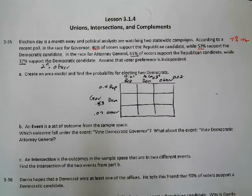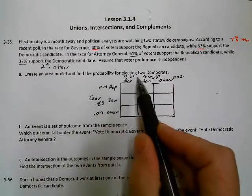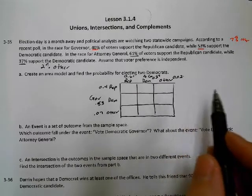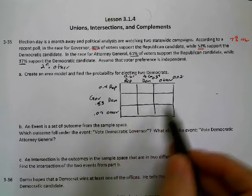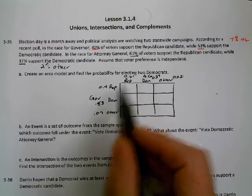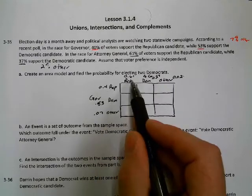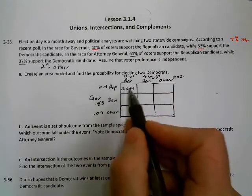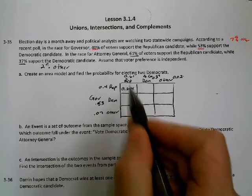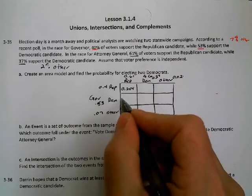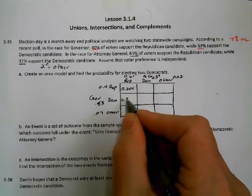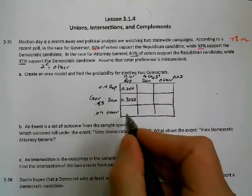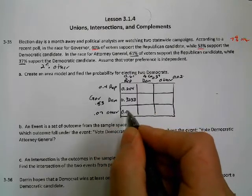We want to find the probability for electing two Democrats — a Democrat for governor and Democrat for attorney general. This is our sample space. Two Republicans: 0.4 times 0.61 equals 0.244. Democrat governor and Republican AG: 0.53 times 0.61 equals 0.3233. Other governor and Republican AG: 7% times 61% equals 0.0427.